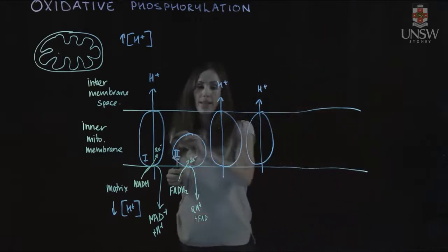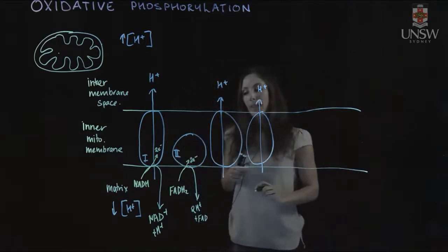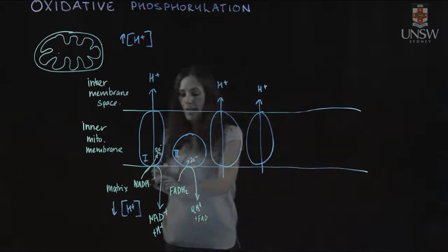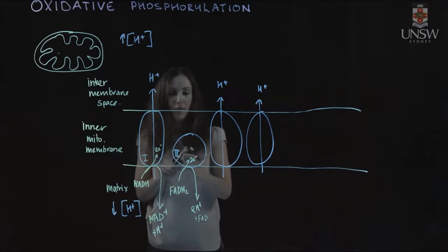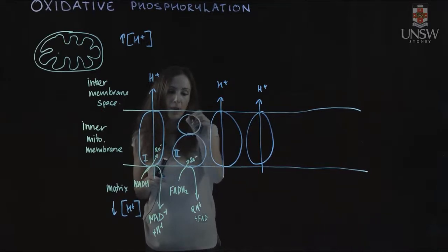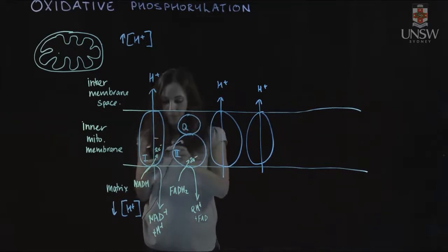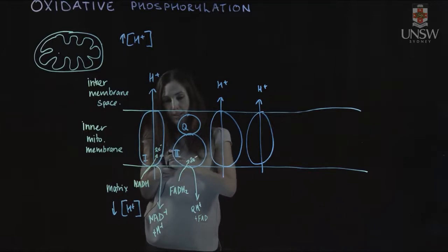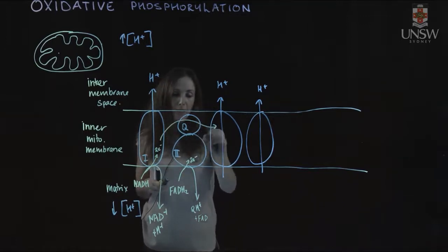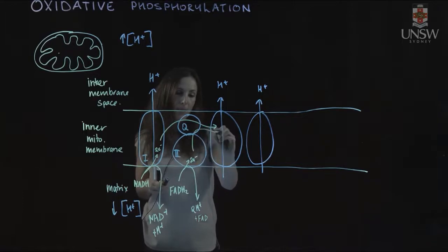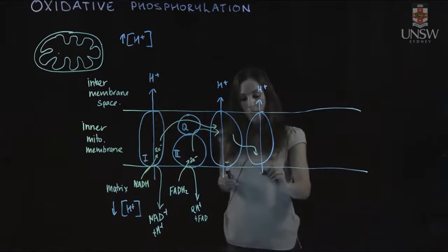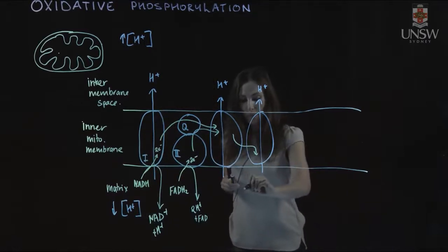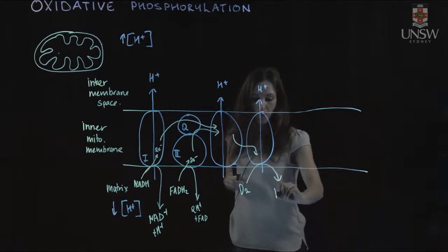Those electrons then flow through the electron transport chain. From NADH they go to Complex I, then to ubiquinone, an electron carrier molecule. They flow to Complex III and then to Complex IV. These electrons are ultimately used to reduce molecular oxygen to water.